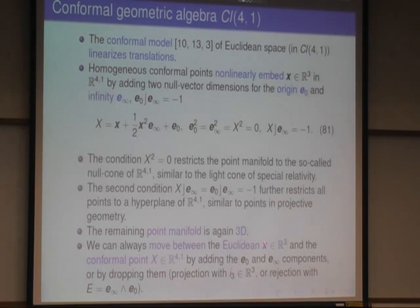And you can move between the Euclidean representation and the conformal representation of a point easily. You can always add the two components or take them away again. Take them away, you can do, for example, by projection on the blade I3 or R3 or rejection from this extra blade.